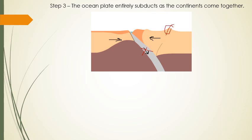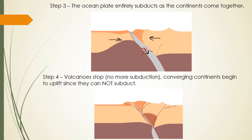Subduction stopping means there's no more volcanoes — subduction is what makes the magma. So there's no more magma, there's no more volcanoes. You get a dead volcano over there where there used to be a volcano because there's no more magma. Step three is the ocean plate completely subducts — there's no more ocean. And step four is the volcanoes turn off. There are no more volcanoes anymore because there's no more subduction.